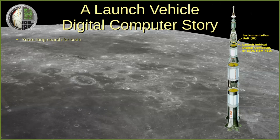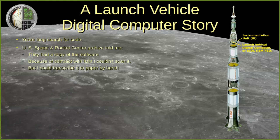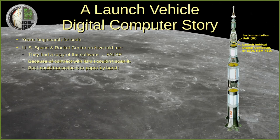The AGC itself couldn't control the actions of the Saturn V rocket — that job was performed by the LVDC, developed and manufactured by IBM's Federal Services Division. At some point, we got word that the U.S. Space and Rocket Center Archive had a copy of this software, but the archive told me that they couldn't legally allow me to digitize the program listing. If I wanted it, they said I'd have to copy it by hand. So on my vacation, I drove 750 miles from Dallas, Texas to Huntsville, Alabama, only to find once I got there that it was a mix-up by the archive — in fact, they had no LVDC software at all.